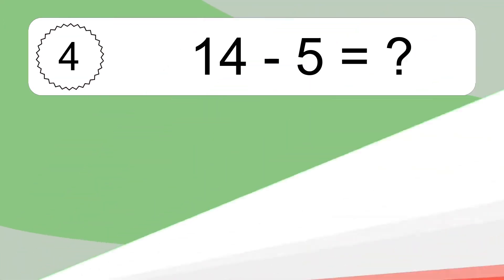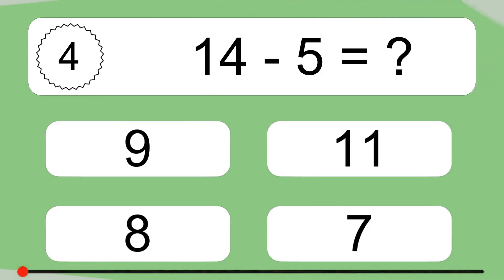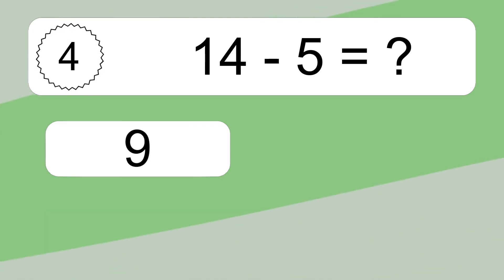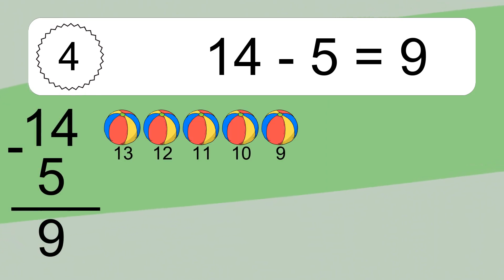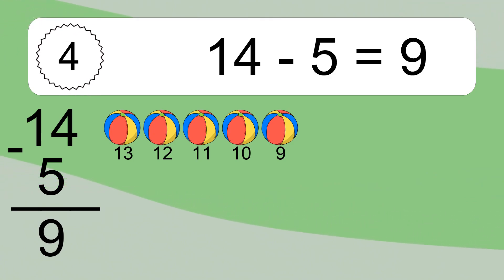14 minus 5 equals what? 14 minus 5 equals 9. Let's count it: 13, 12, 11, 10, 9.